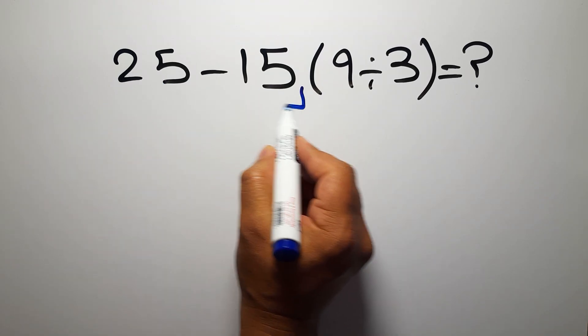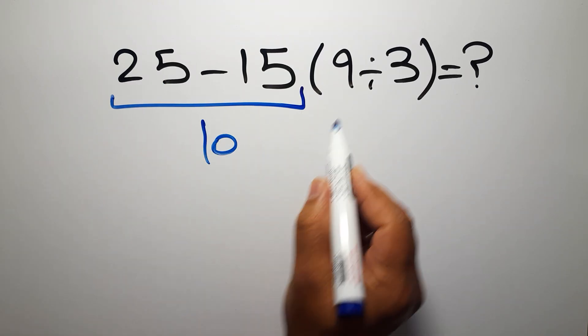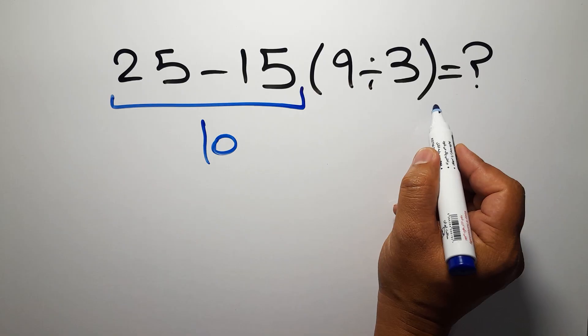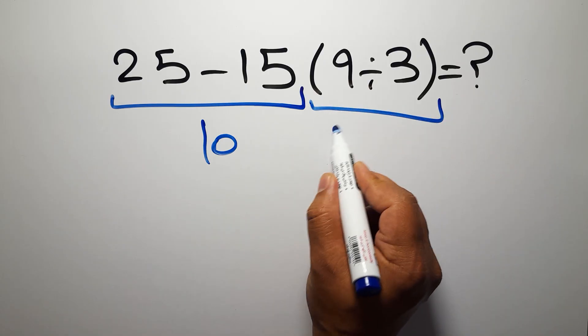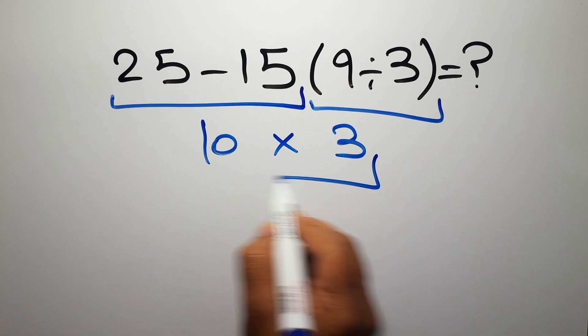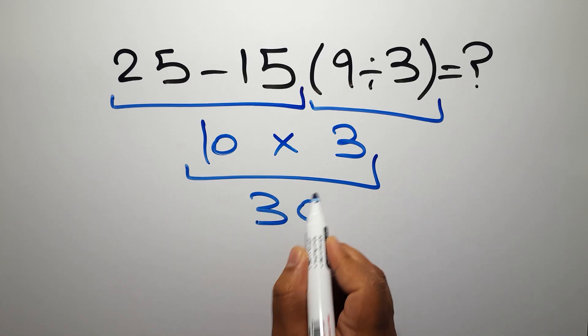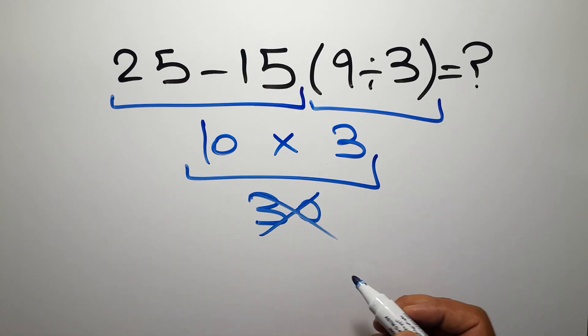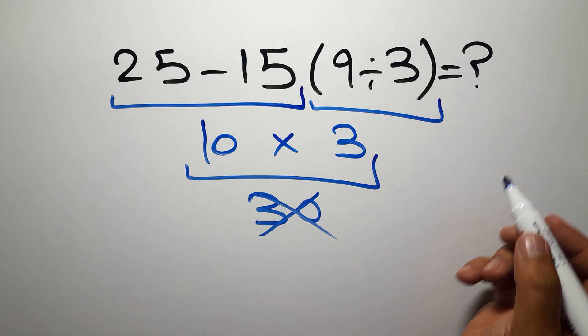25 minus 15 gives us 10, and here we have 9 divided by 3 which equals 3, and 10 times 3 which equals 30. But this answer is not correct because according to the order of operations, first we have to do parentheses, then exponents, then multiplication or division, and finally addition or subtraction.